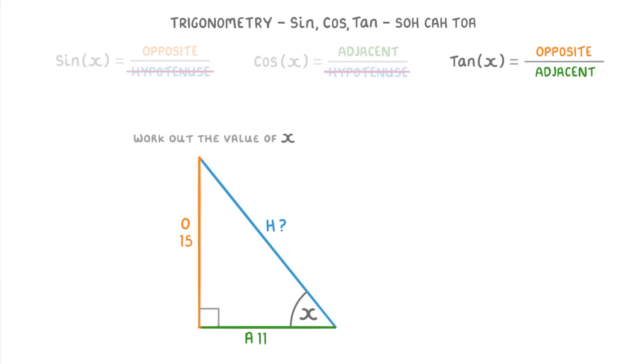So if we rewrite this out, plugging in the values that we know, we get tan X equals 15, the opposite, divided by 11, the adjacent.